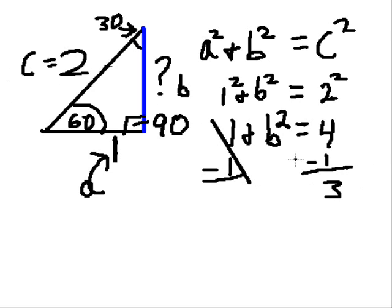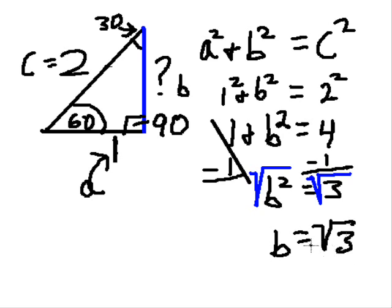That leaves me with b squared equals 3. So I take the square root. If I take the square root of one side, the radical of b squared equals radical 3. And of course, that becomes b equals radical 3.